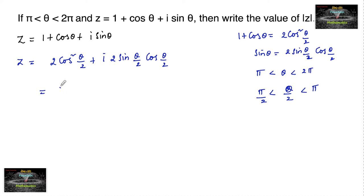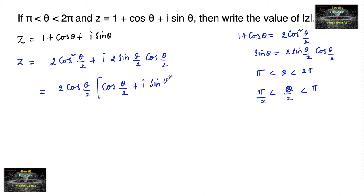We can take out 2 cos(θ/2) as a common factor, giving z equal to 2 cos(θ/2) times the quantity cos(θ/2) plus i sin(θ/2). Now let us find mod z.